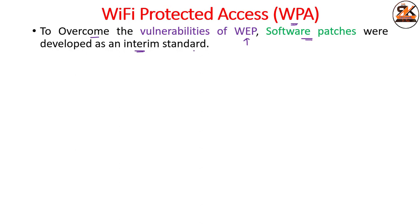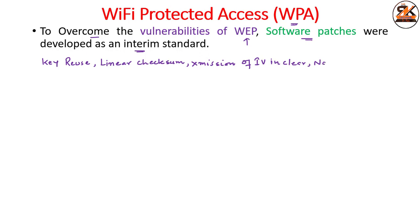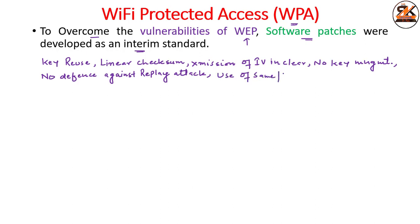What were the vulnerabilities of WEP? Key reuse issue, calculation of linear checksum, transmission of IV in clear, no key management, no defense against replay attack, use of same or static keys, no mutual authentication, and so on. There were some vulnerabilities in WEP, and in order to overcome these vulnerabilities, Wi-Fi Protected Access came as a software patch.